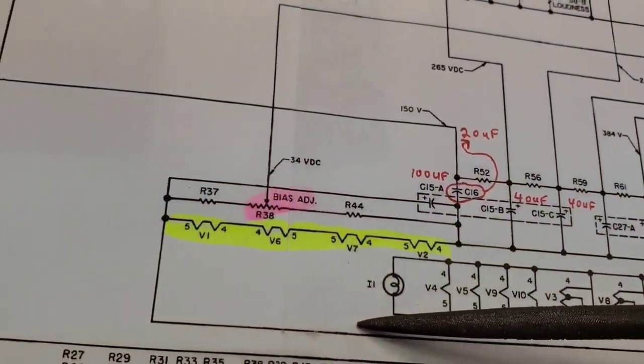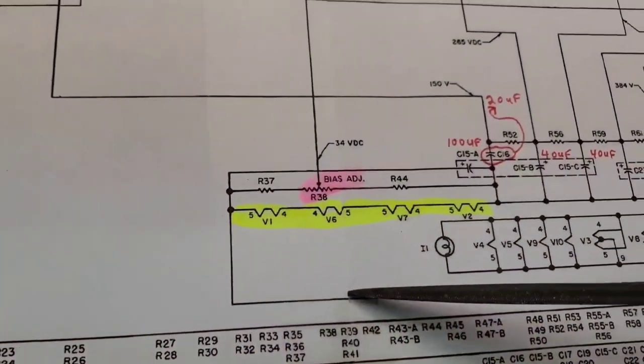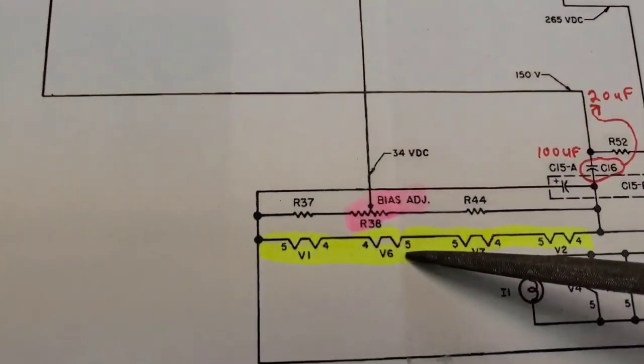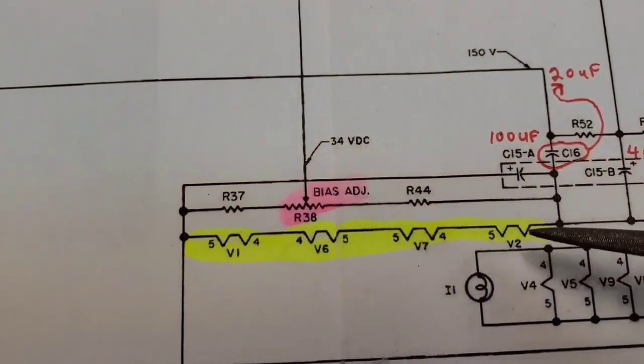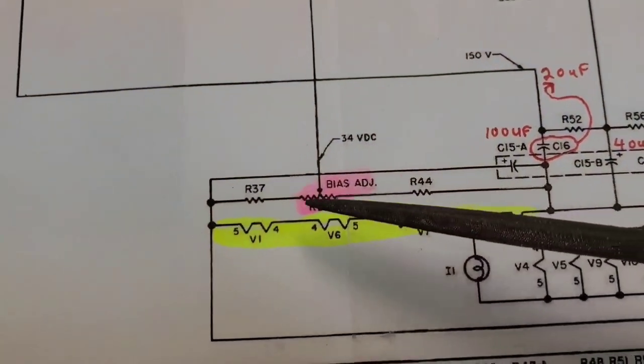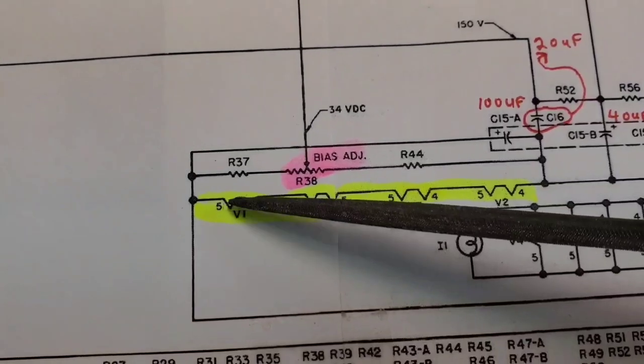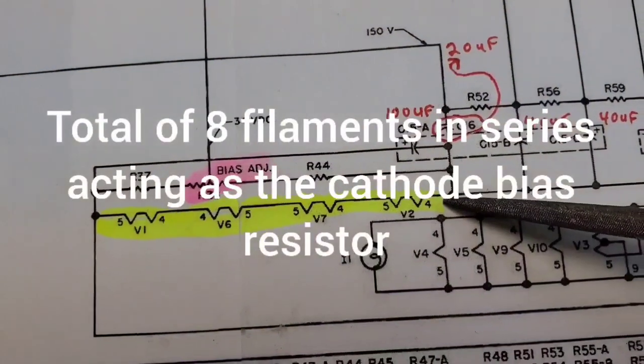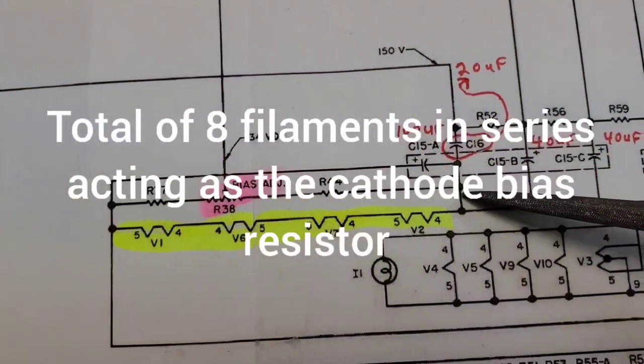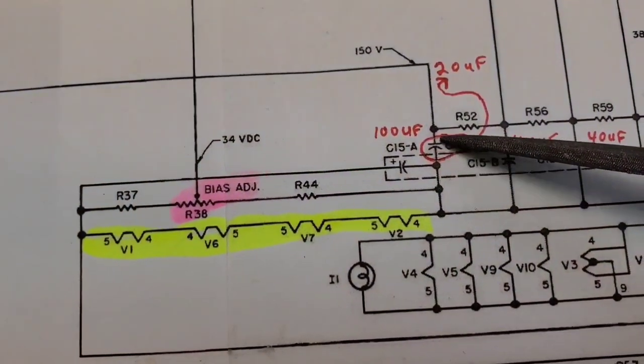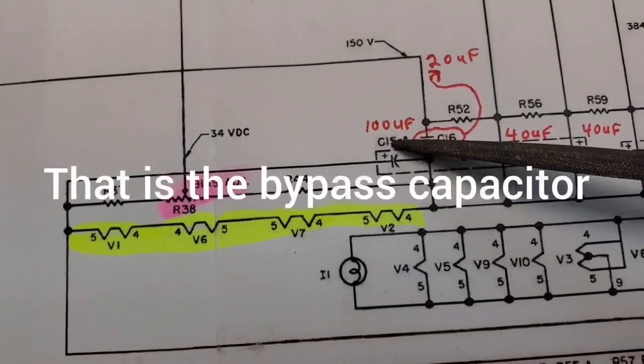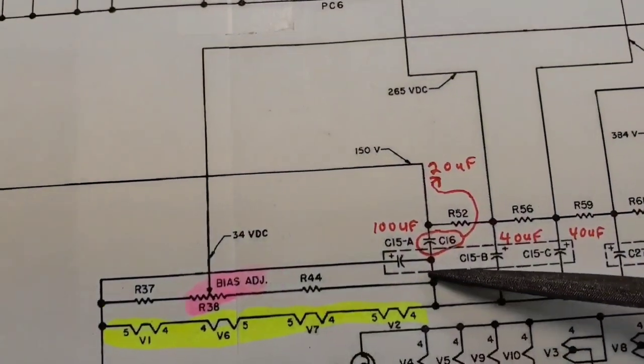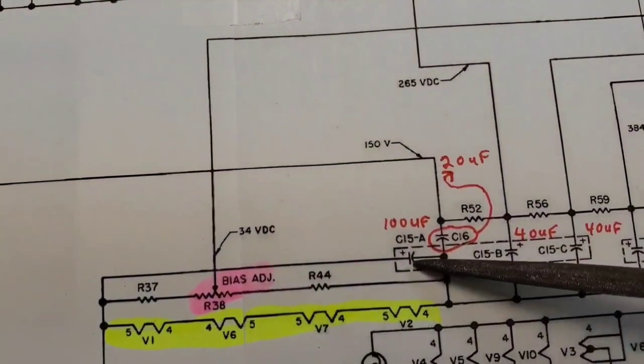Instead of a resistor, we're going through V1, V6, V7, and V2 filaments. Now these are 12X7s, which are two tubes in one. So you have two filaments, and they're all in series. So that's what enables the filaments to be heated by DC voltage. And then you have to also have a capacitor, and this is it right here. That's why you have this small capacitor. It's 100 microfarads. It's only rated like 150 volts, and the voltage here is low.